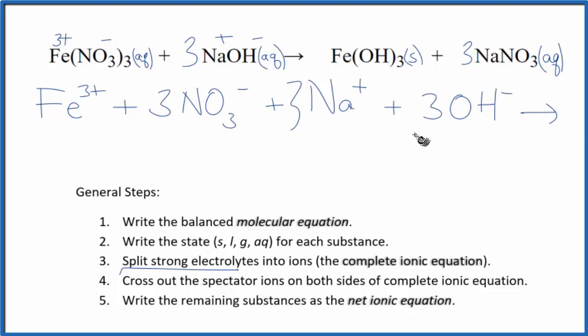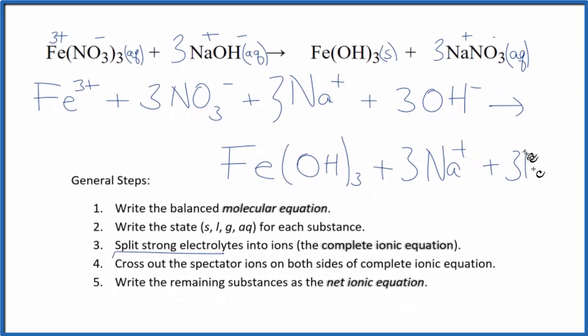And these are the reactants. For the products, we have iron 3 hydroxide. It's a solid. Net ionic equations, we don't split solids up. So it's just Fe(OH)3. Then we have plus and minus. So we have three sodium ions plus those three nitrate ions.